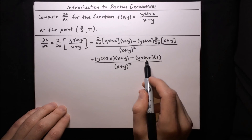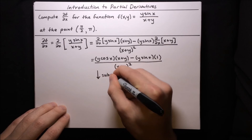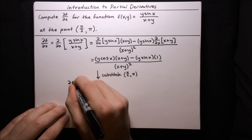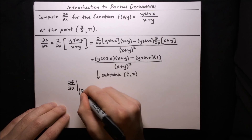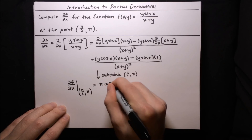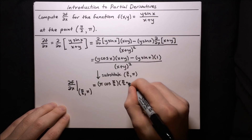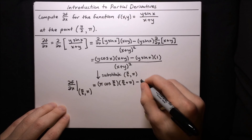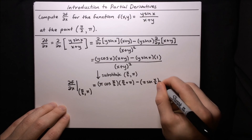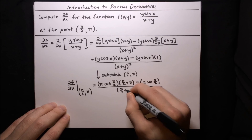Now we have the expression for the partial derivative and we're ready to substitute the point (π/2, π). Substituting x = π/2 and y = π: the numerator becomes π·cos(π/2)·(π/2 + π) minus π·sin(π/2)·1, and the denominator is (π/2 + π)².